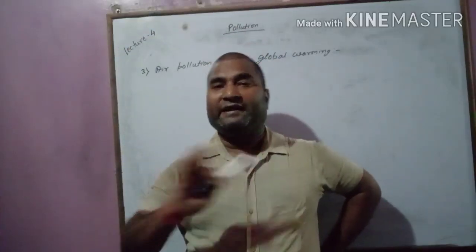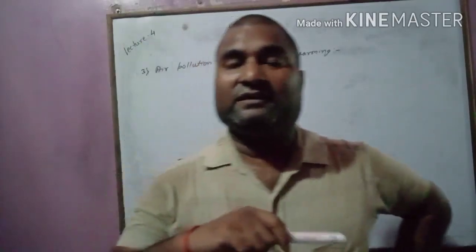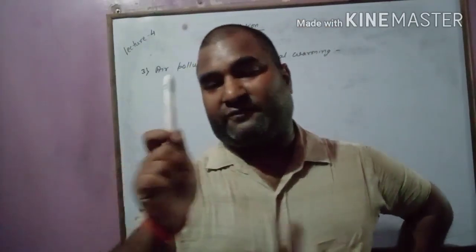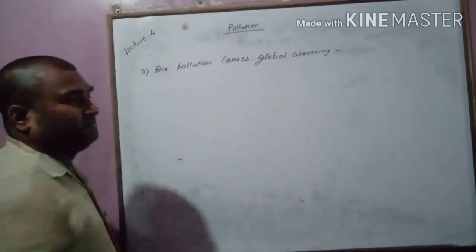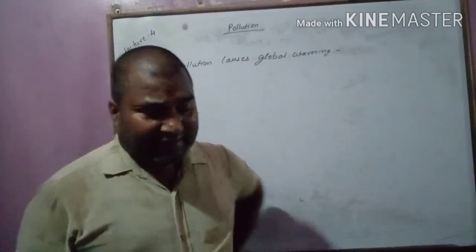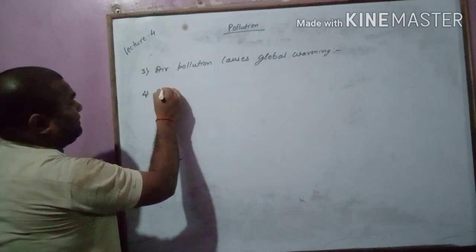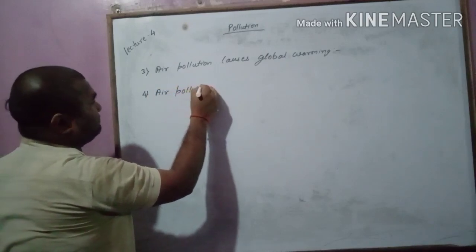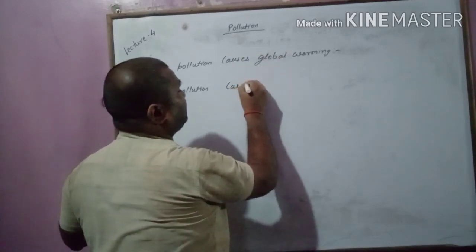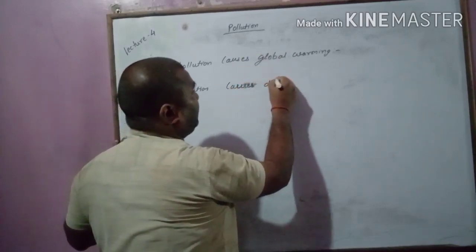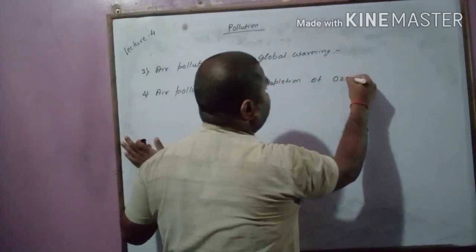Global warming was already explained in the last chapter on combustion. Next, air pollution causes depletion of the ozone layer.